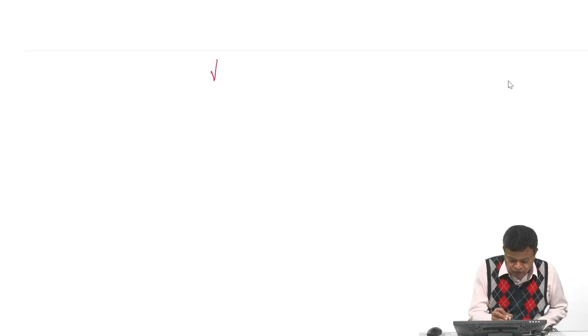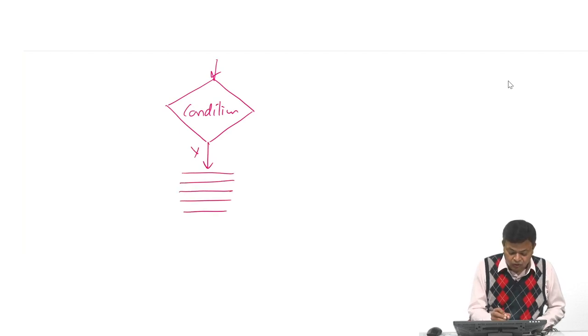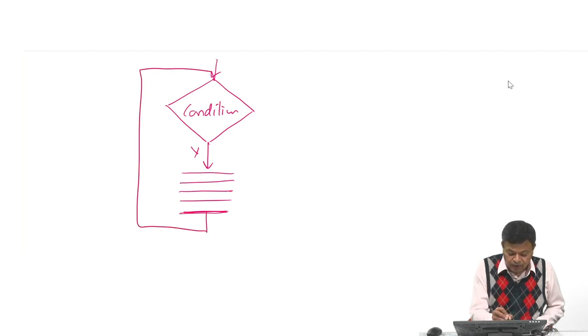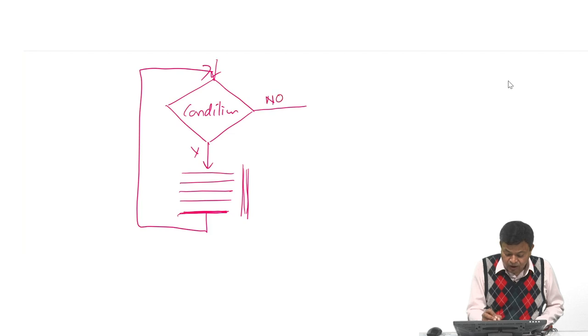Today we are discussing loops. We do not directly start with for loop or while loop — first we try to understand the basics. For that purpose we will be using a decision box where there will be a condition. If that condition is true then we will enter inside the loop. There will be some statements, and the last statement inside the loop will be the one updating the condition. After that we go back up and check the condition again. If it is true we go inside the loop again; when it becomes false we come out of the loop.